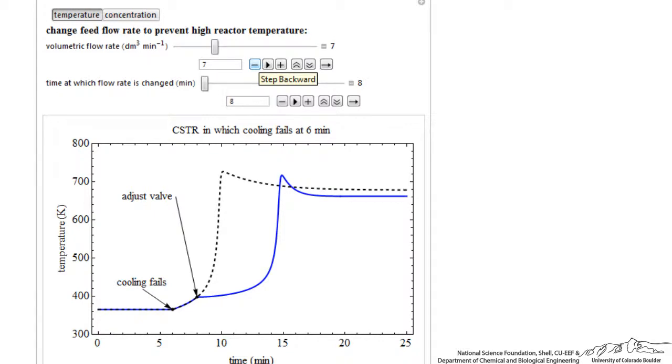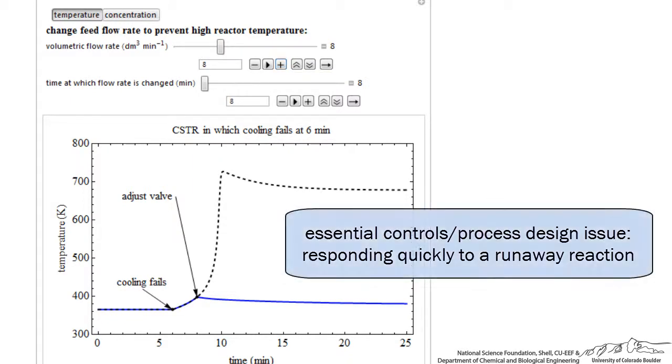Here increasing the flow rate to seven is not enough to stop, but increasing the flow rate to eight is. So it's both the time and how high we increase the flow rate.